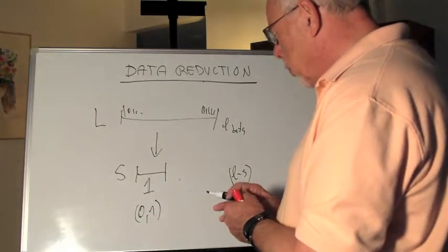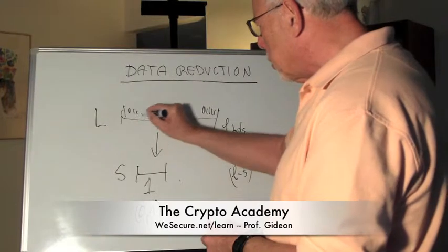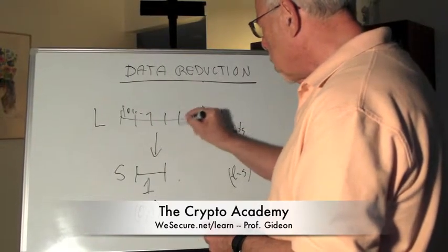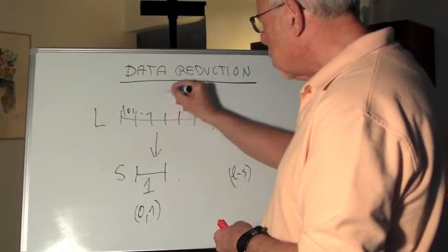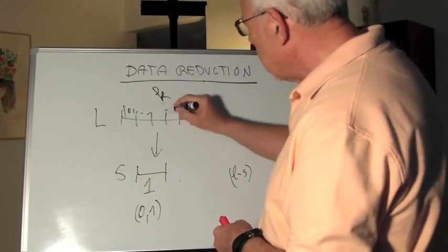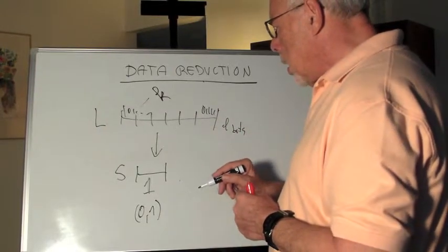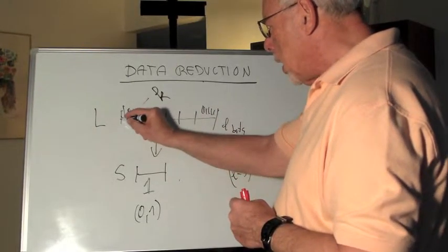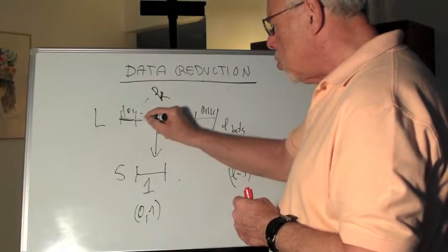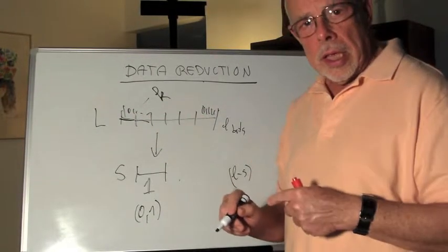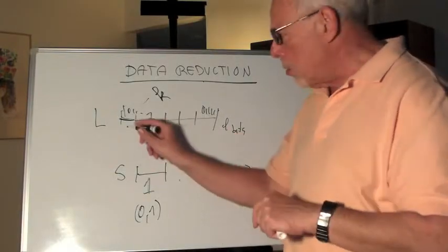Now it's obvious that if we take this long string and cut it into sections, and let's say we have here k sections, one, two, three, four, five, k.